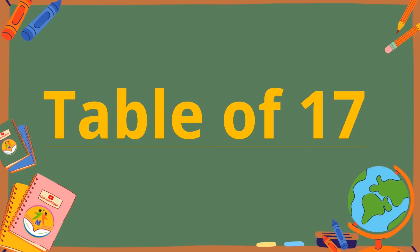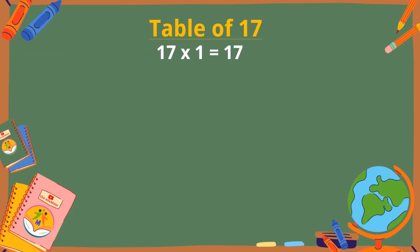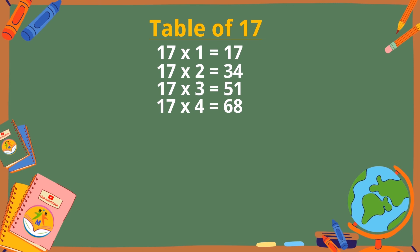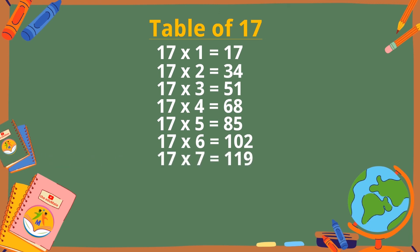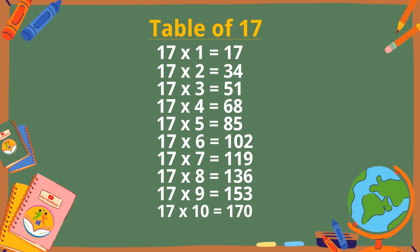Table of 17. 17 ones are 17, 17 twos are 34, 17 threes are 51, 17 fours are 68, 17 fives are 85, 17 sixes are 102, 17 sevens are 119, 17 eights are 136, 17 nines are 153, 17 tens are 170.